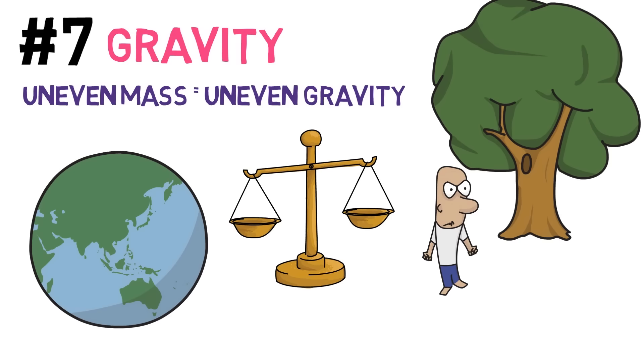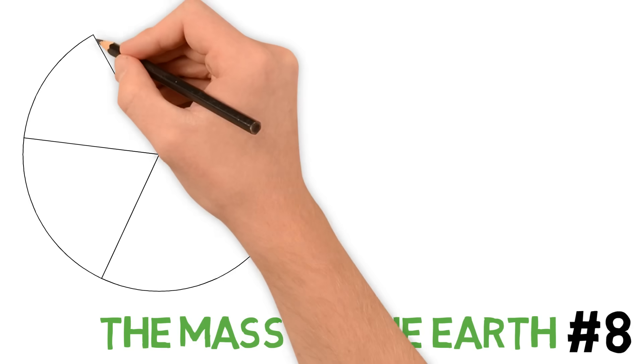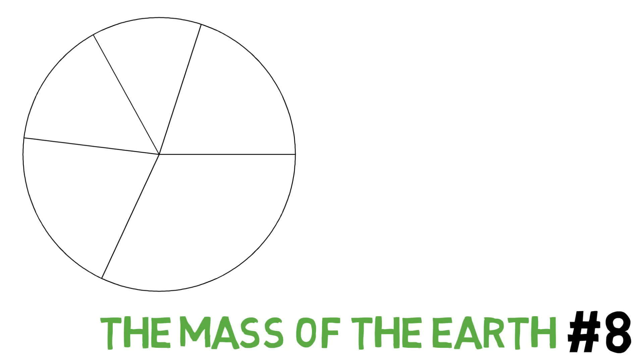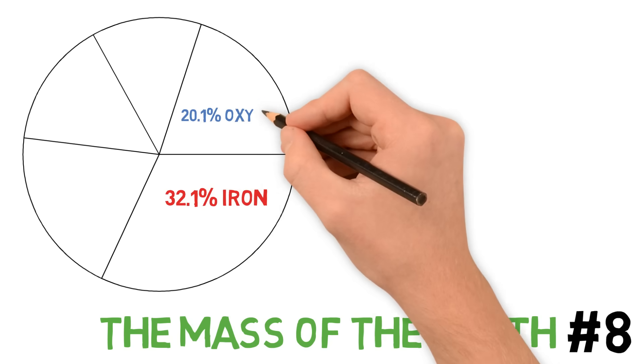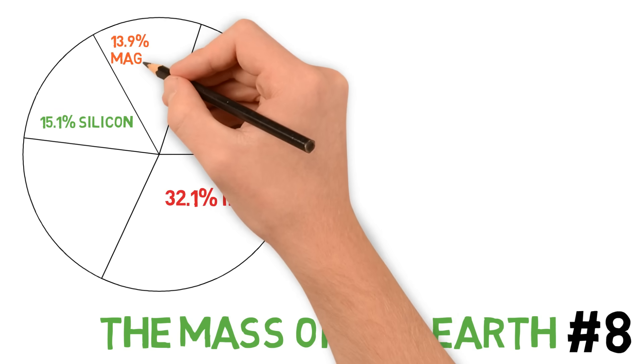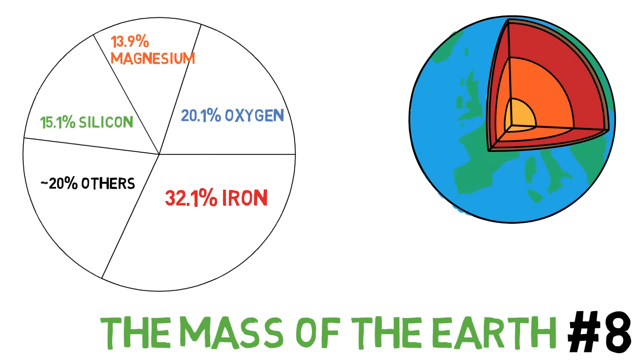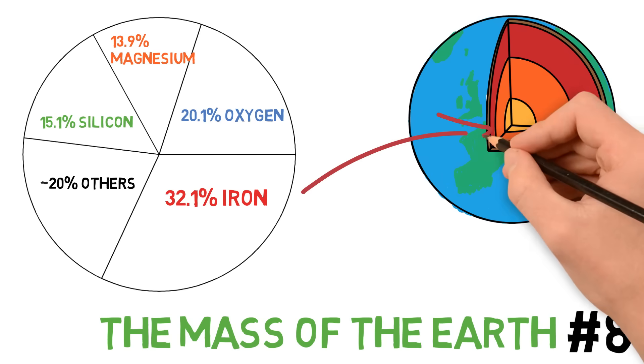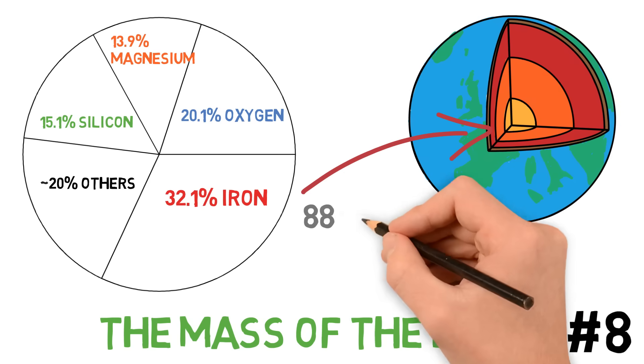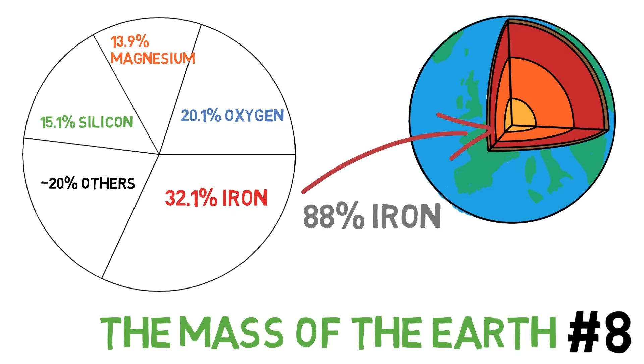Speaking of the mass of the Earth, if we could separate the planet into its main components or materials, you would get 32.1% of iron, 20% of oxygen, around 15% of silicon, as well as 13.9% magnesium. We should, however, keep in mind that most of this iron is located at the core of the planet, which is apparently 88% iron, most of it melted, causing the magnetic field which we talked about earlier.